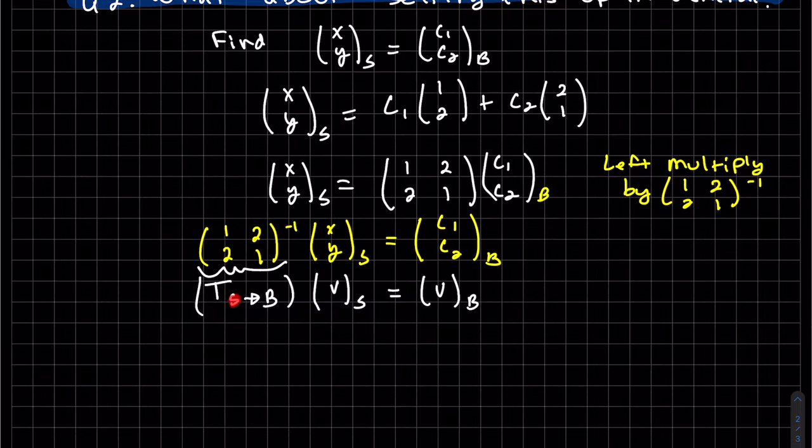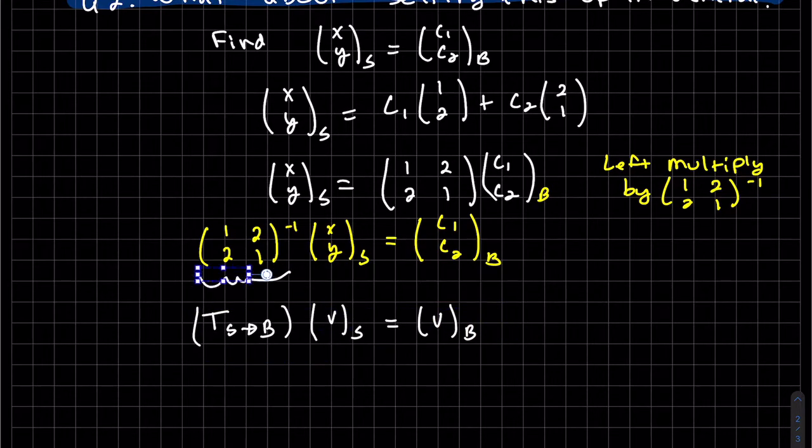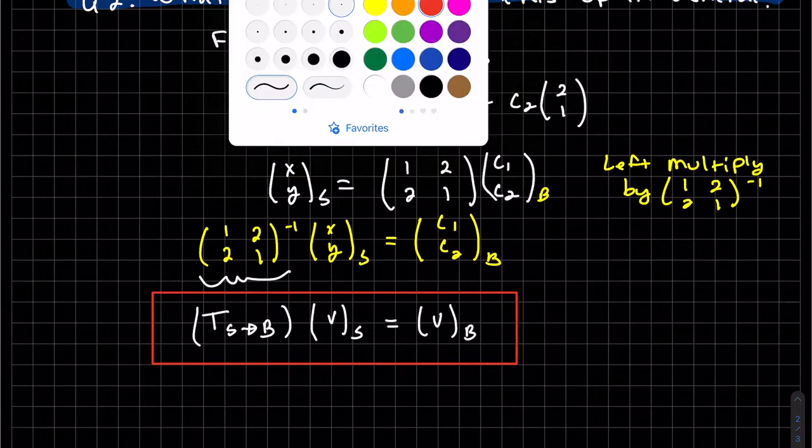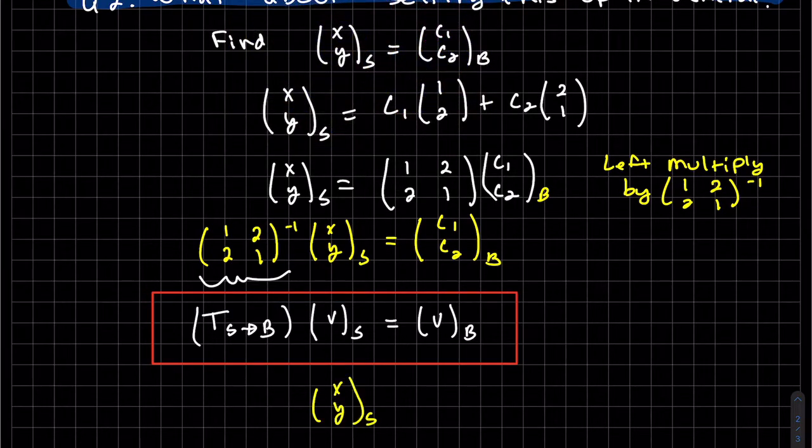Remember, it's going from S. You multiply the vector from S to find the new vector in terms of B. And this is our formula that we've generated. And this converts standard to C1, C2.